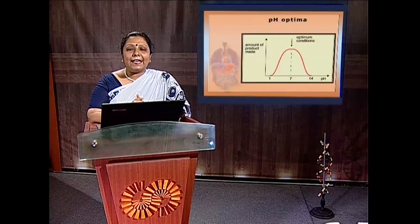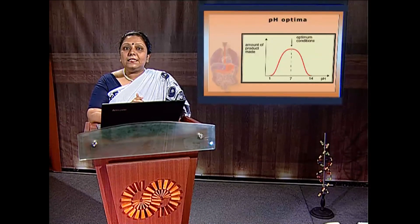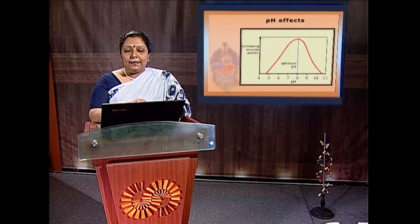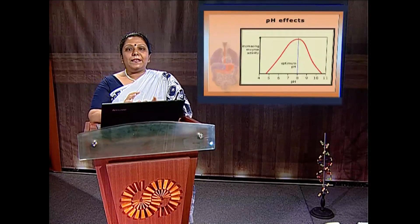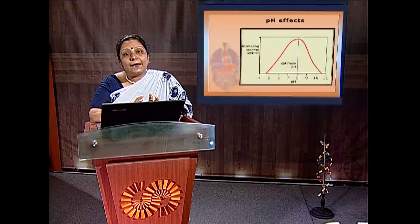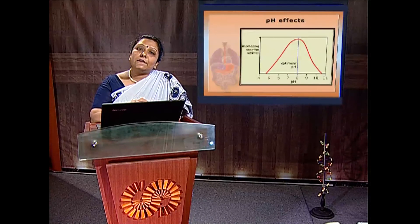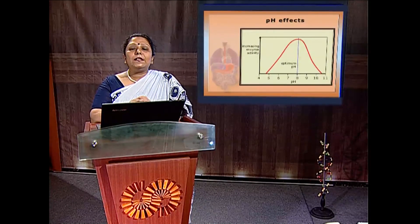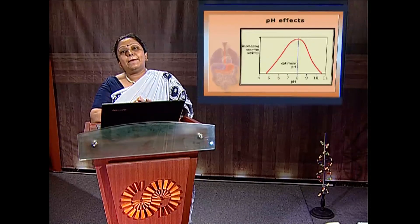The pH optima generally lies within 4 to 8, but for pepsin it is 2. As pH changes, there are several consequences: the three-dimensional secondary, tertiary, and quaternary structure of the protein can be denatured; dissociation of the enzyme-substrate complex occurs via ionic interactions; apoenzyme dissociation occurs; and the metal ion state of the coenzyme cofactor can also change. These effects are reflected in changes to Km and Vmax.